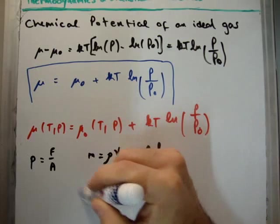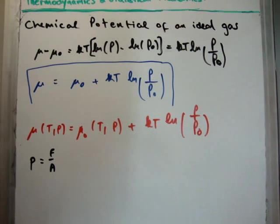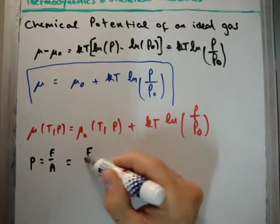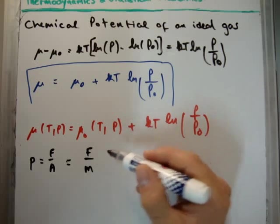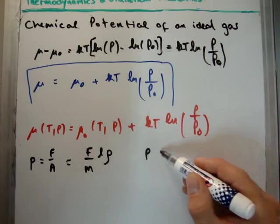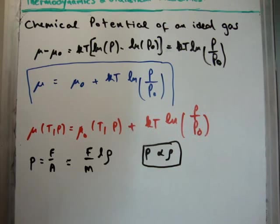So if we sub this back in, what we're going to get is that the pressure is equal to the force divided by the mass multiplied by the length multiplied by the density. The conclusion here is that pressure is proportional to the density. That's the conclusion here.